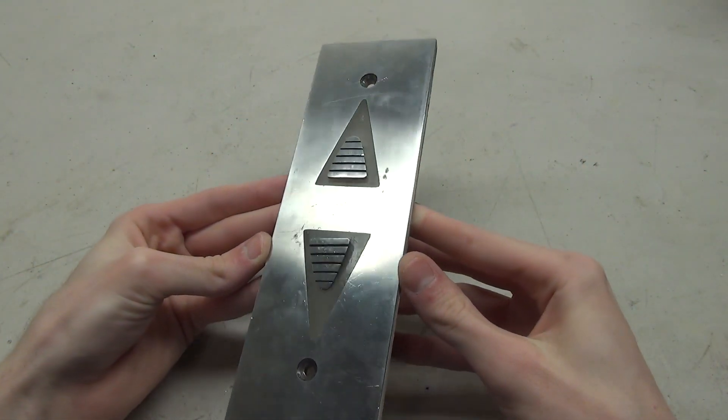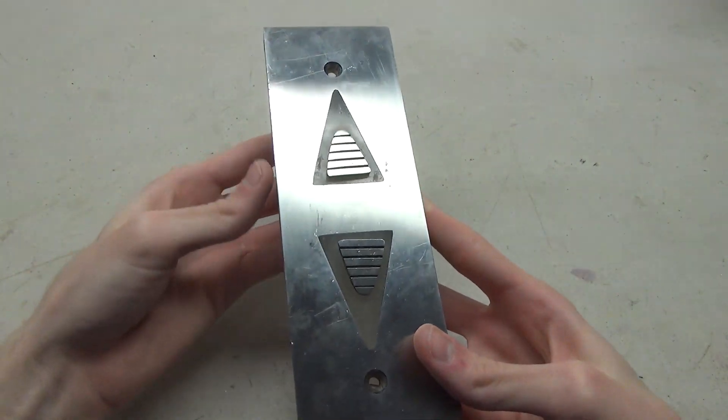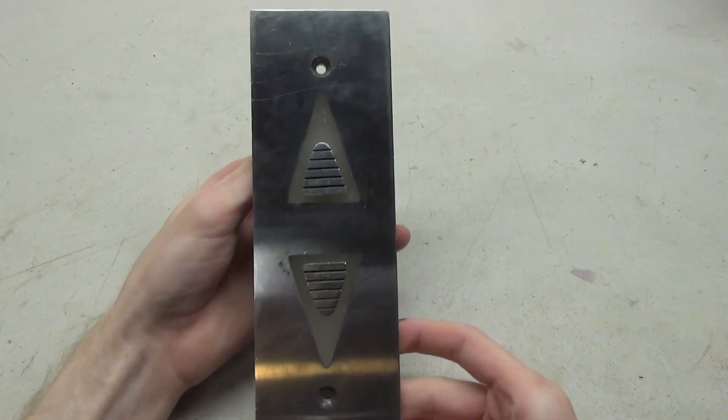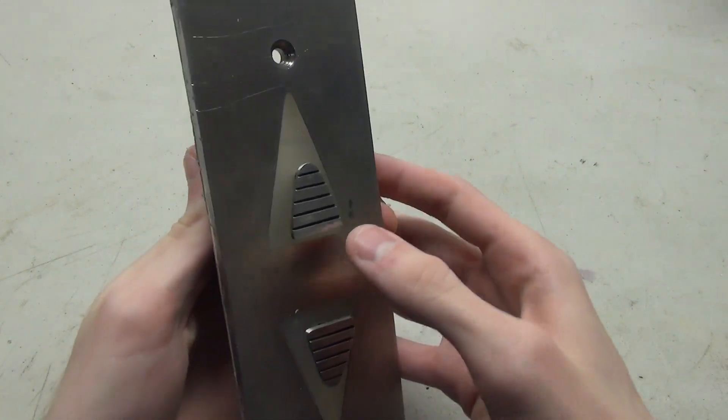Alright everyone, on today's elevator parts video, we have this Westinghouse triangle button. Now this thing is pretty interesting, and if you've ever seen these buttons out in the field before, they're pretty neat.